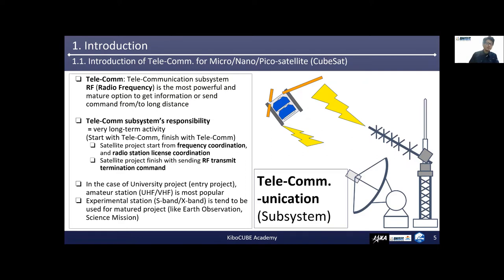If you face any development difficulties in your amateur radio mission, please actively release information about your mission to the amateur radio community — the amateur radio community must support your project. On the contrary, experimental stations like S-band or X-band tend to be used for more mature projects like Earth observation or science missions. To use S-band or X-band, generally a parabolic antenna facility is needed, so the initial cost tends to be high. Therefore, in many cases, after accumulating some experience in a lower frequency band like UHF or VHF, they upgrade to a higher frequency band.